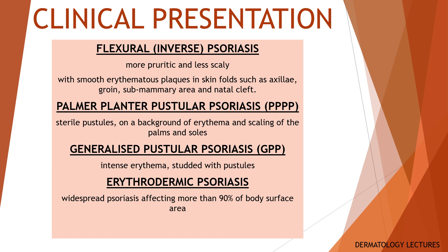Generalized pustular psoriasis is a rare but serious form of psoriasis and can be life threatening. It is characterized by intense erythema studded with pustules which may coalesce to form lakes of pus. Generalized pustular psoriasis can occur spontaneously or be precipitated, for example, by the long-term use of super potent topical steroids or withdrawal of oral steroids. Generalized pustular psoriasis is a medical emergency.